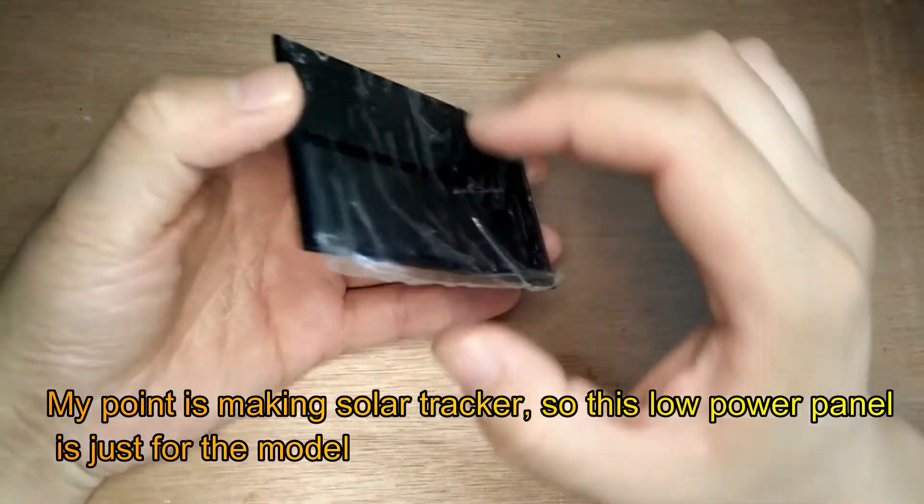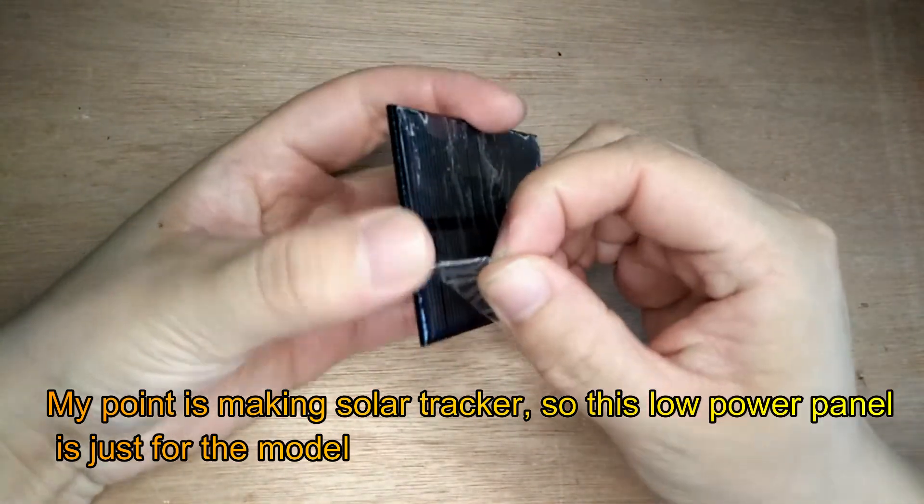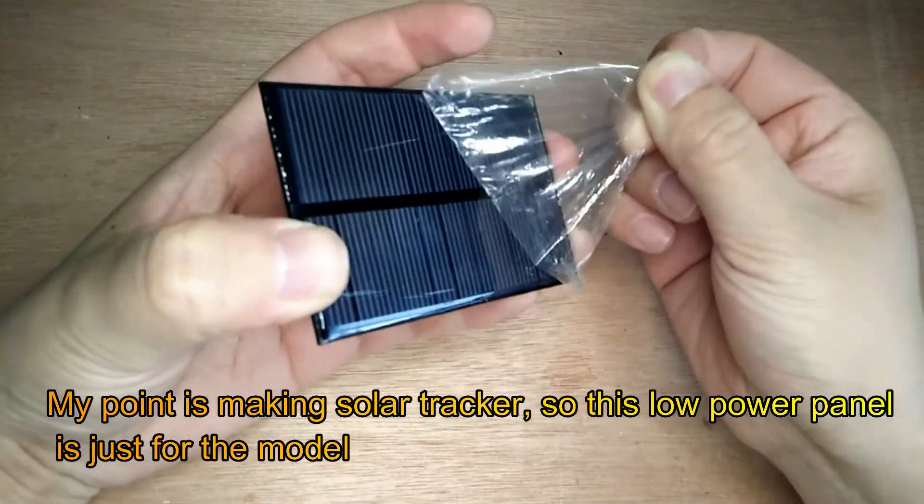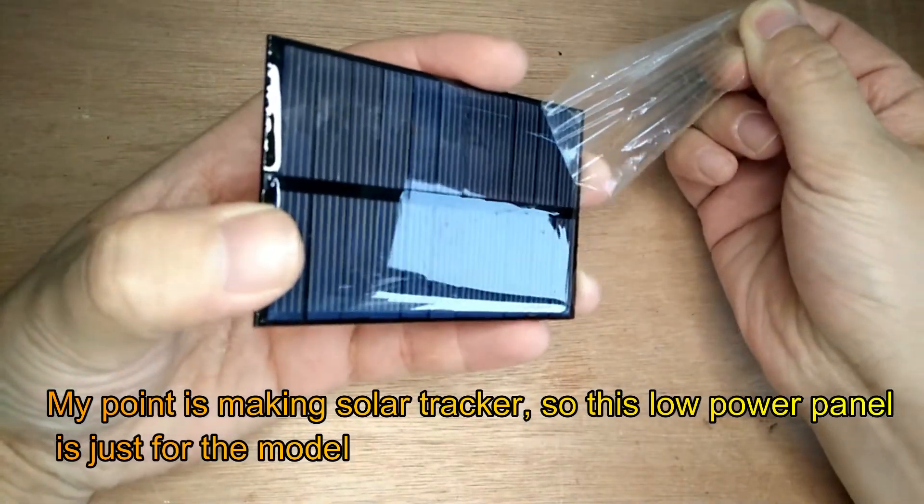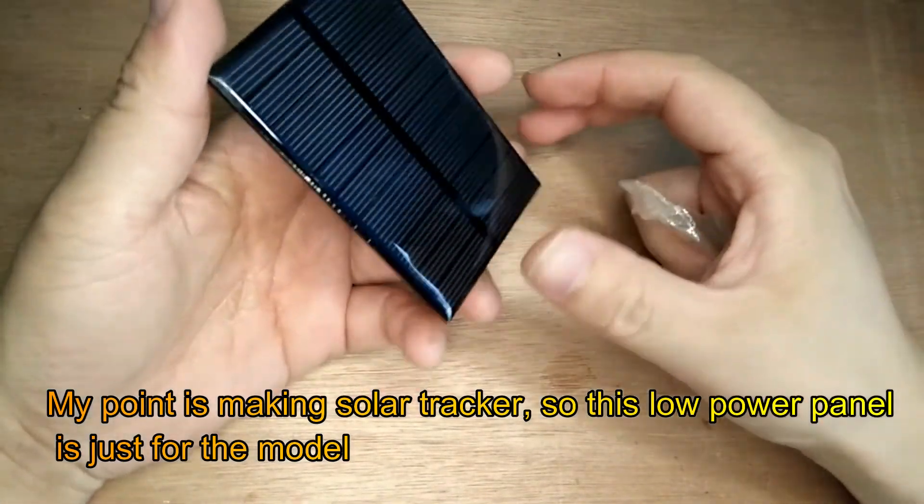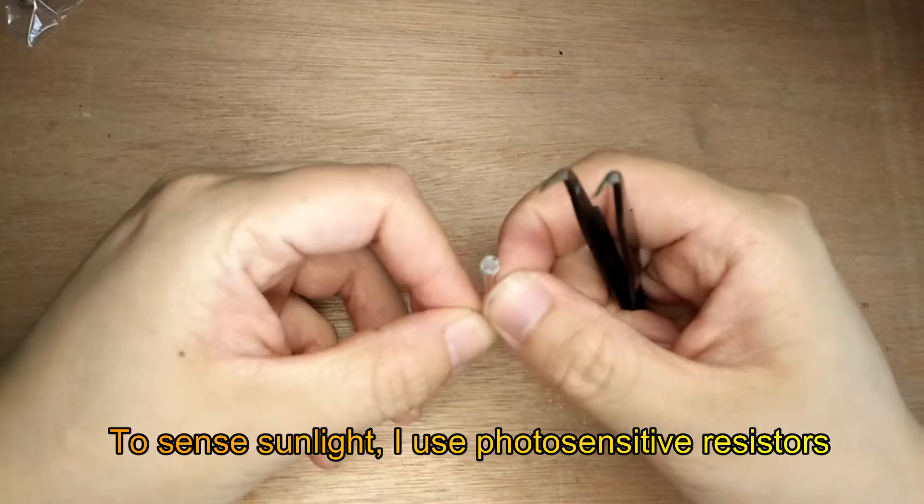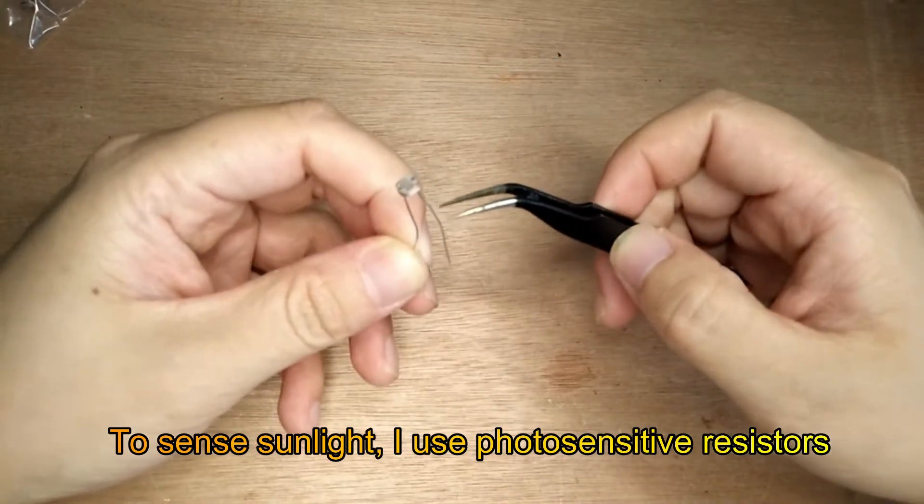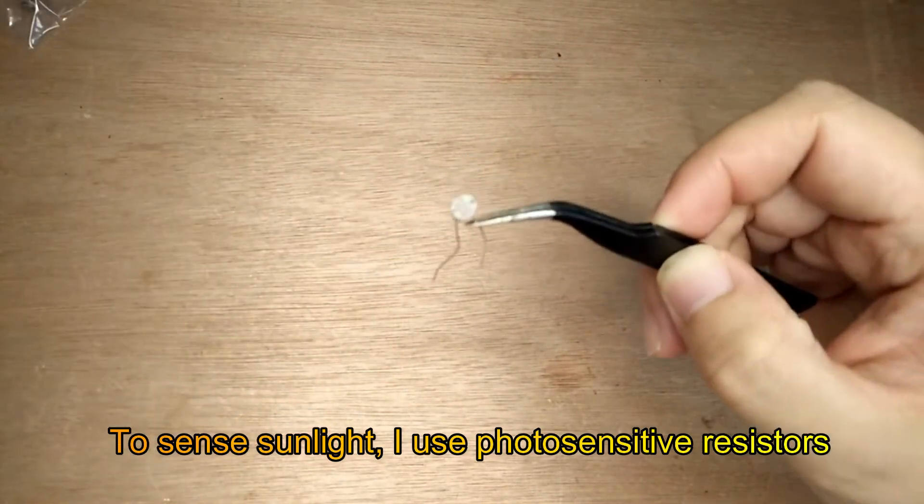My point is making solar tracker, so this low power panel is just for model. To sense sunlight, I use photosensitive resistors.